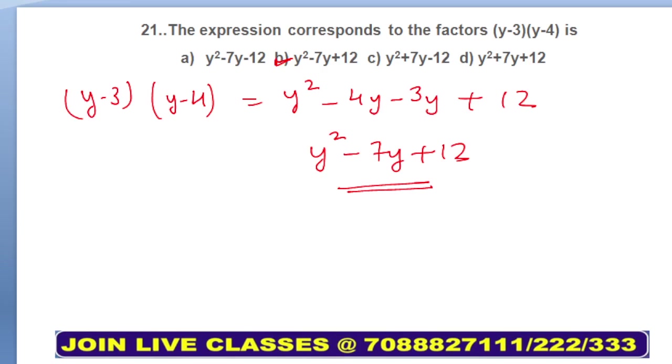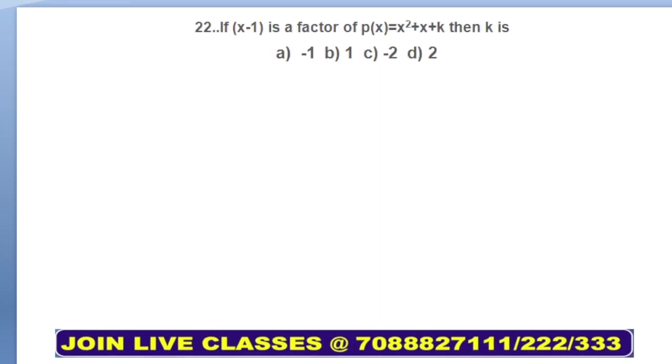Moving on to next question, question number 22. If (x - 1) is a factor of p(x) = x² + x + k, then k is? If (x - 1) is a factor, then what will be the value of x? x - 1 is a factor means x - 1 = 0, so x value will be 1.